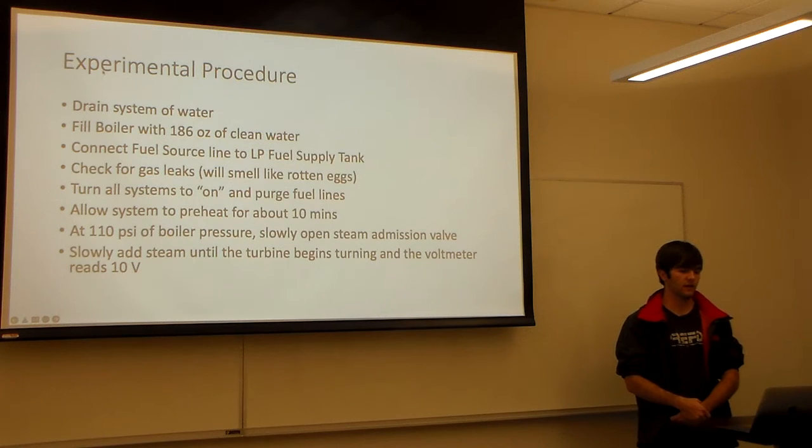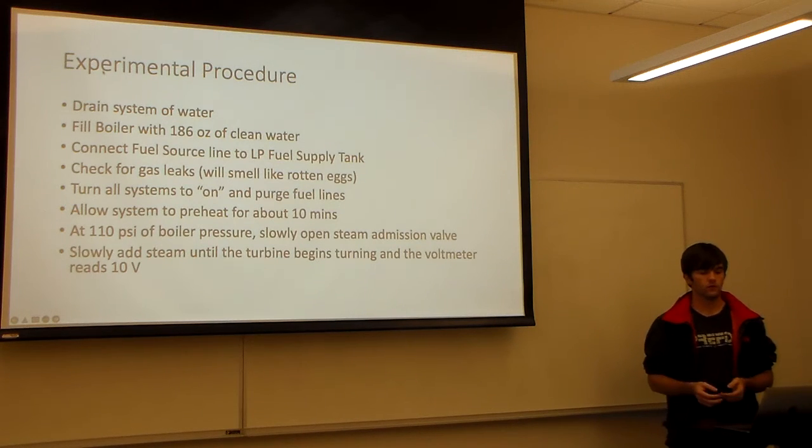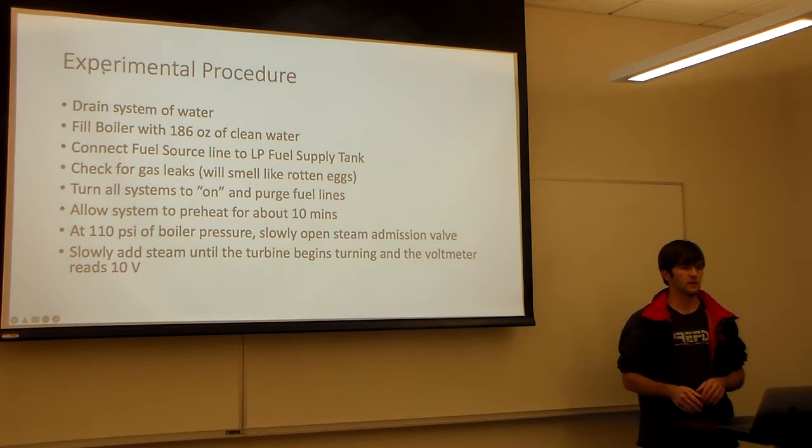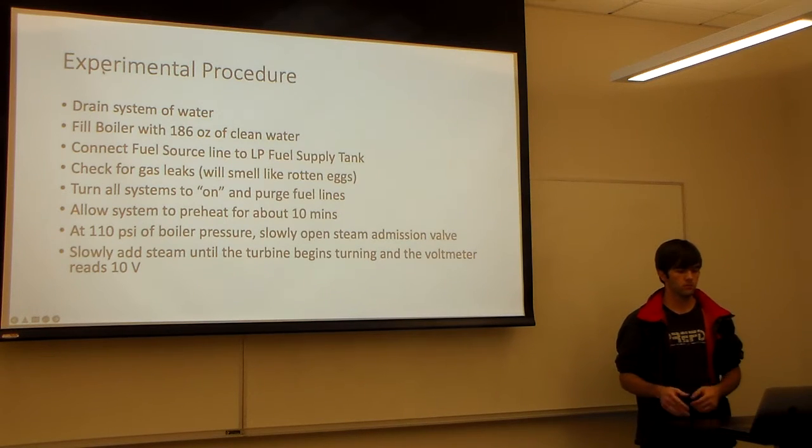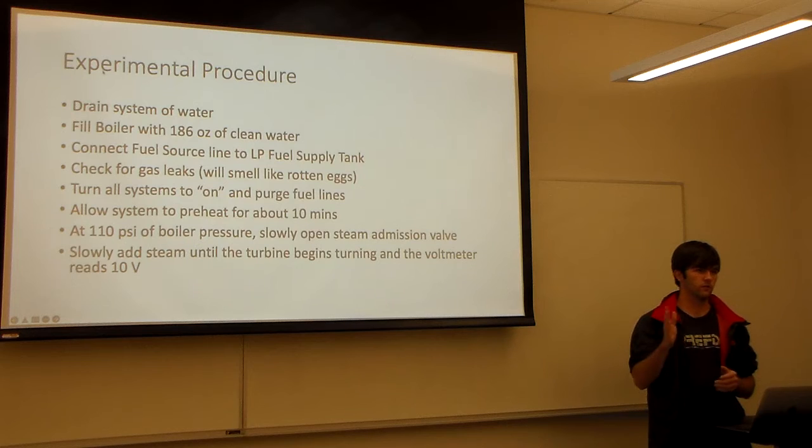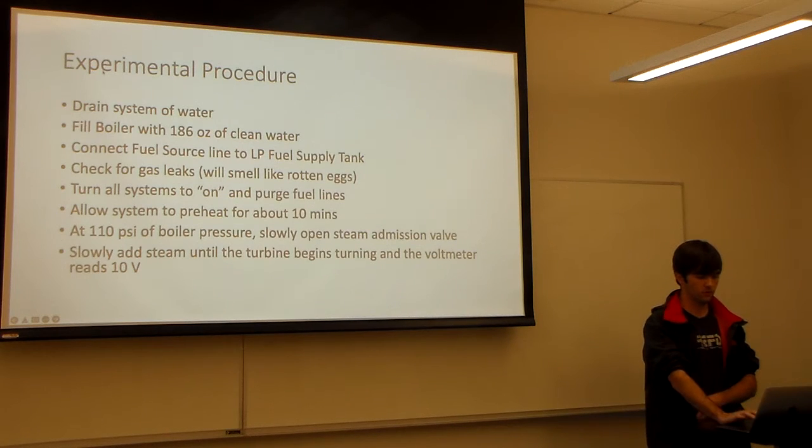And at 110 psi of boiler pressure, we slowly open the steam admission valve to get the generator to about 10 volts. And then we keep opening it to keep the generator at 10 volts because it starts dropping voltage.